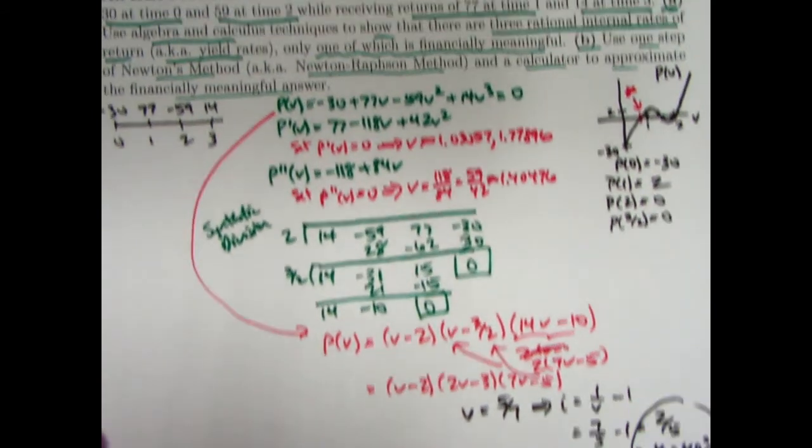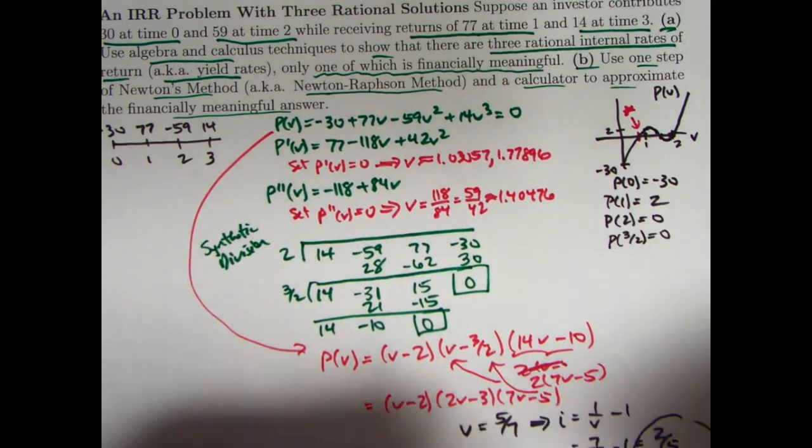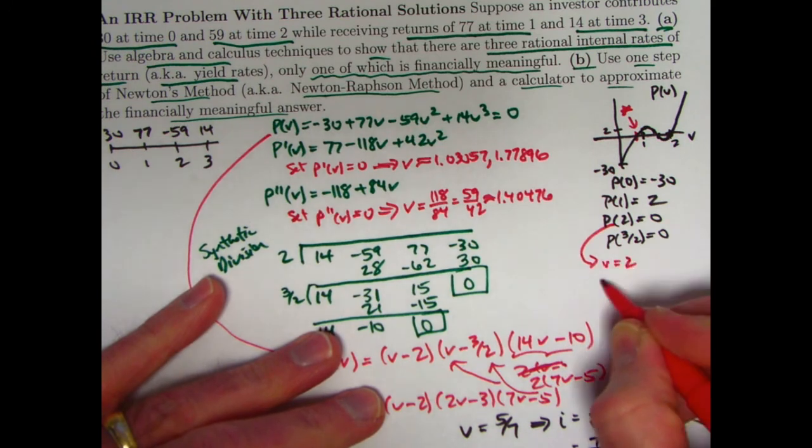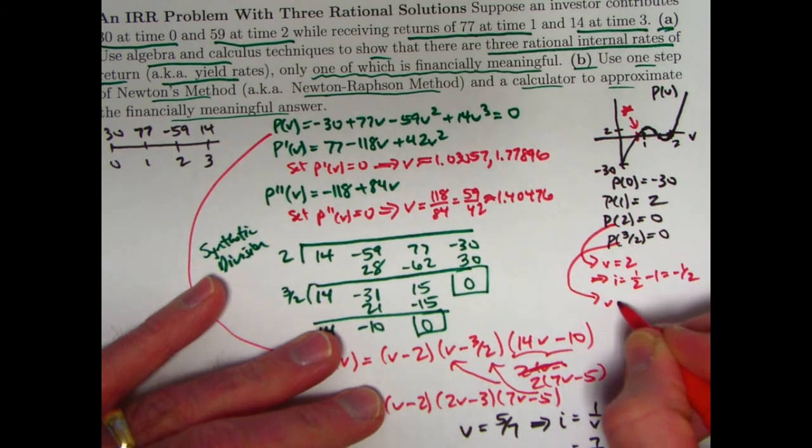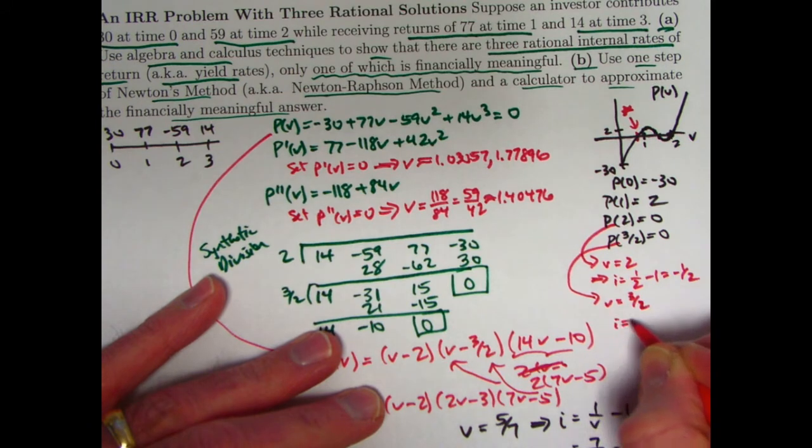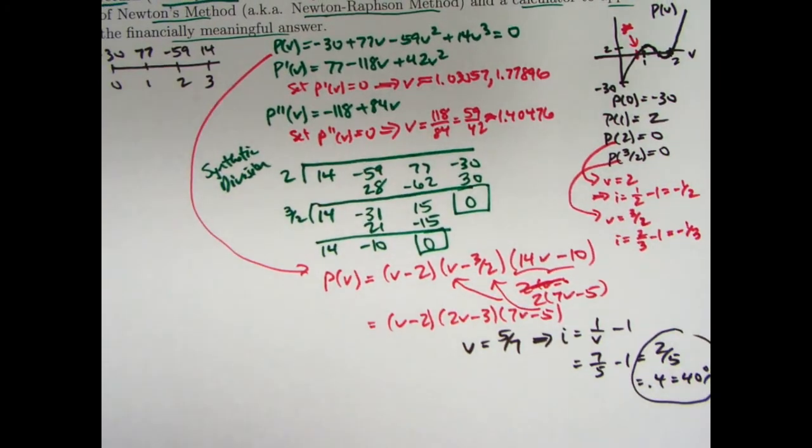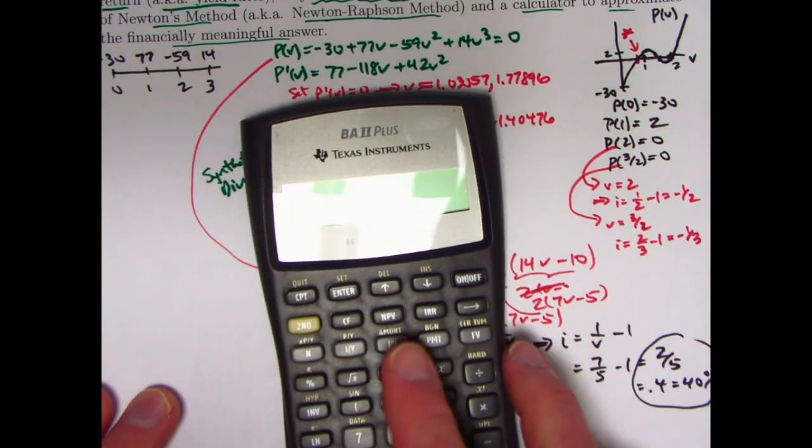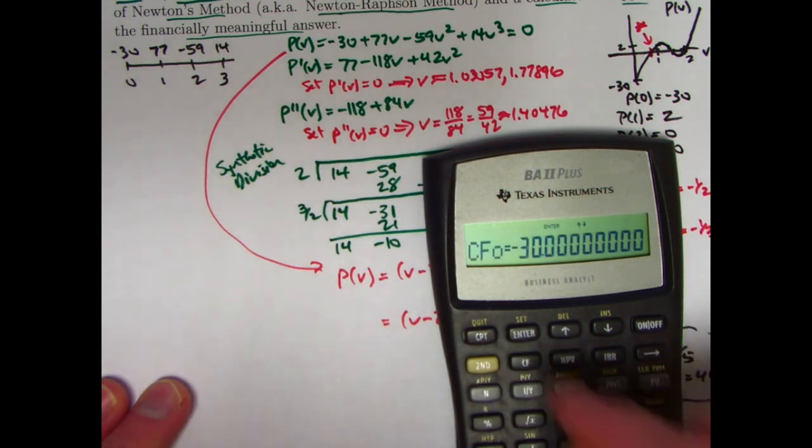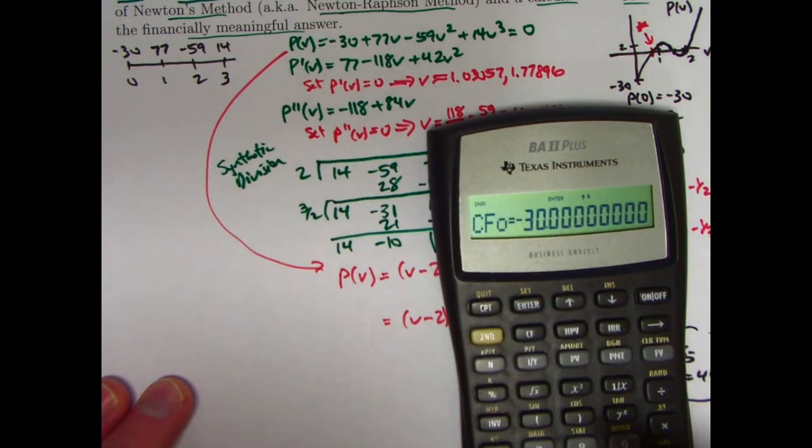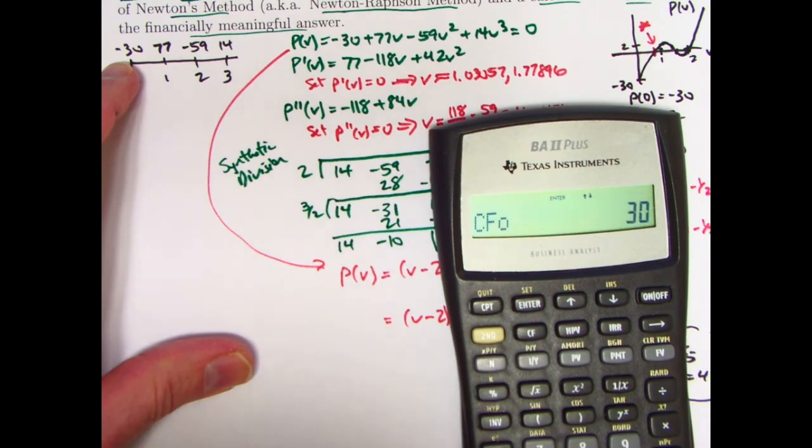The quadratic whose coefficients are these things, 14v squared minus 31v plus 15. But I'll use synthetic division again. Bring down this 14. Multiply 3 halves times 14 is 21. Add to get negative 10. Multiply to get negative 15. Add to get 0. So when you divide 14v squared minus 31v plus 15 by v minus 3 halves, you get 14v minus 10 with a remainder of 0. So what all this means is that p(v) can be factored as 2 is a root, v minus 2, 3 halves is a root, v minus 3 halves, and what's left over is also 14v minus 10.